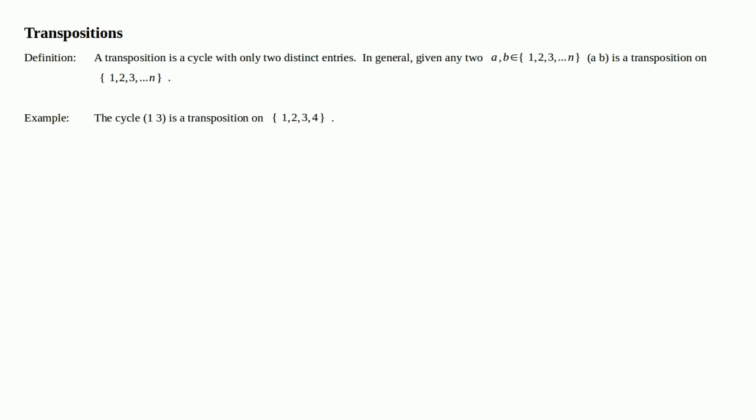For example, the cycle (1 3) is a transposition on the set 1 through 4 because there's just two entries.